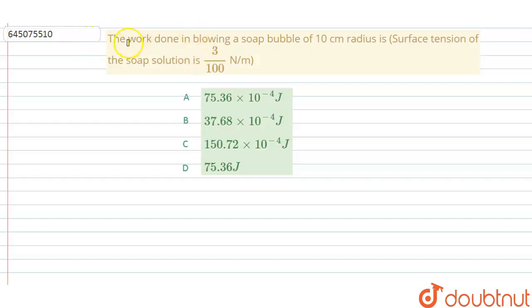The work done in blowing a soap bubble of 10 centimeter radius is... Here, first of all, what is given? A soap bubble is there and the radius of the soap bubble is 10 centimeters.